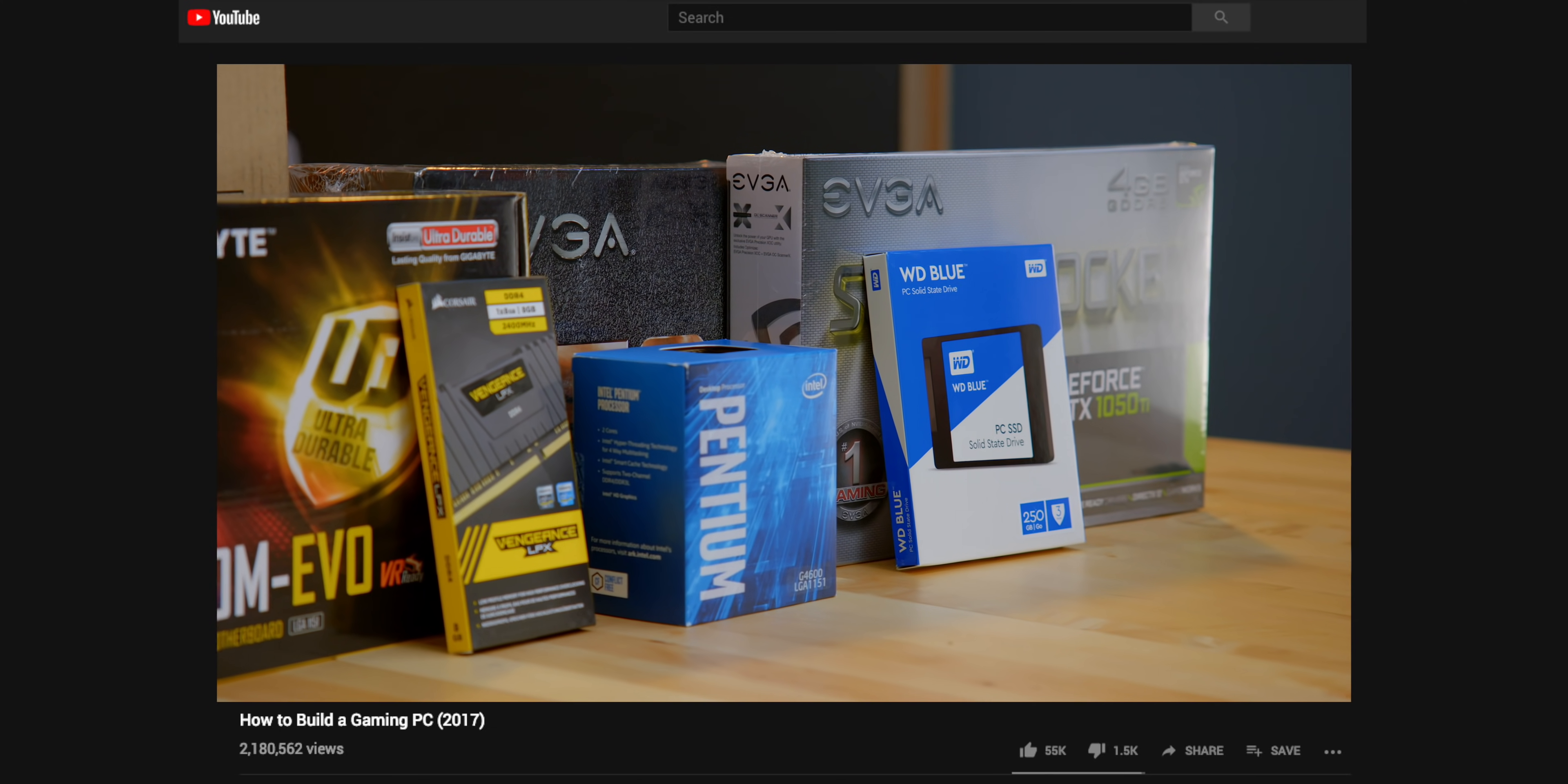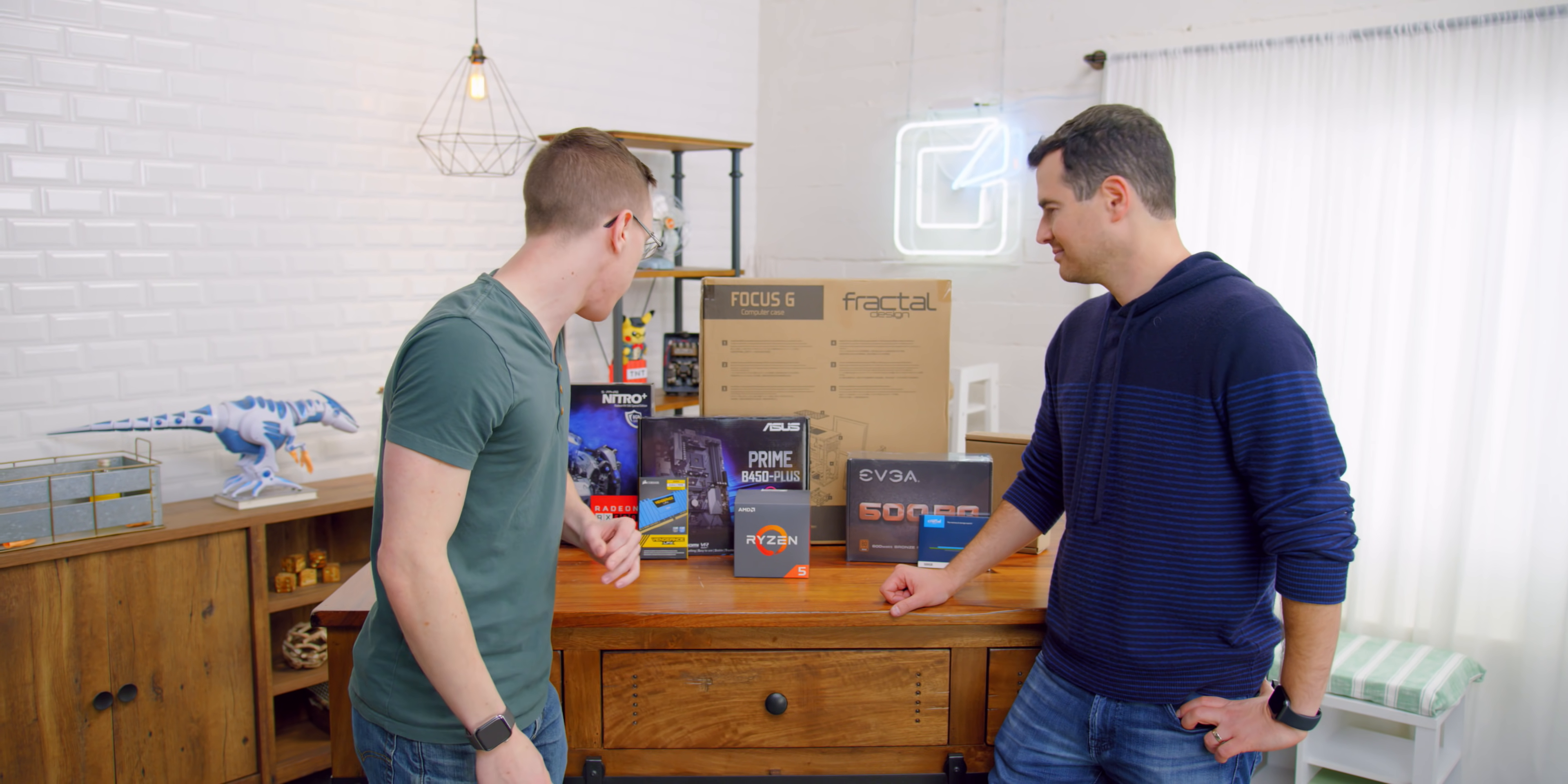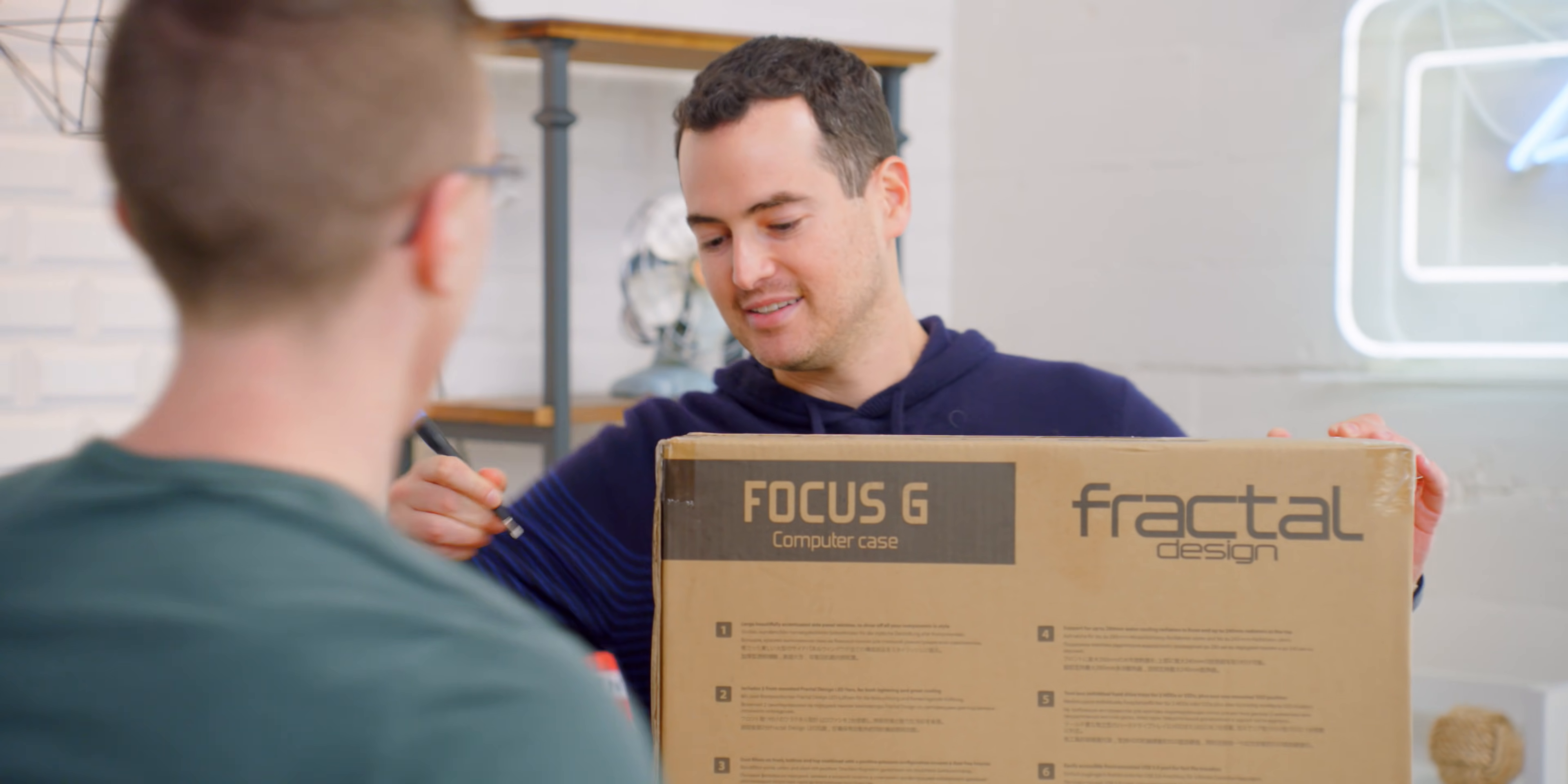So pretty much every year when we do our PC build tutorial, we try to pick a different variety of parts. So this one's a very standard build. It's a full size chassis. We have the hard drive, the SSD, a little bit of everything. But the most important thing here is that we actually have to put it together. When it comes to building a gaming PC, you need exactly one tool, the screwdriver.